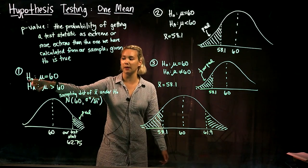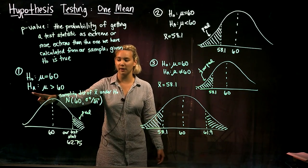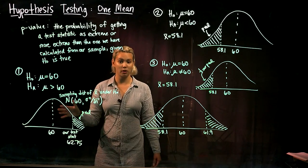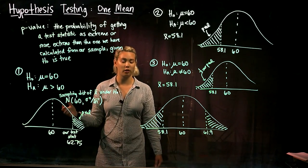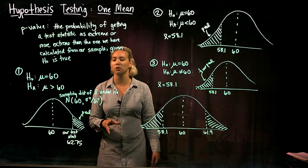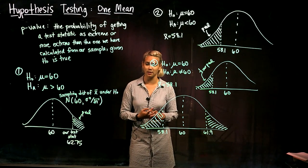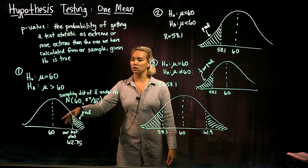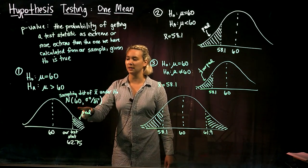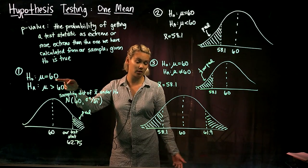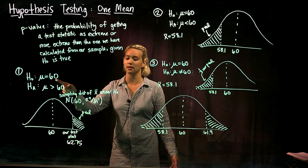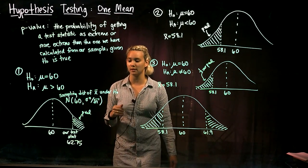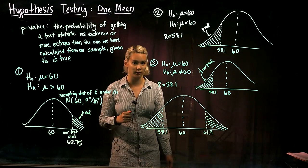So here's our null hypothesis: mu equals 60. The alternative hypothesis was mu is greater than 60. If we wanted to draw a picture of this, we could draw out our sampling distribution of x-bar under the null hypothesis. That would mean drawing a normal distribution with mean 60, because that's what the mean is under the null hypothesis, and with variance sigma squared over n.